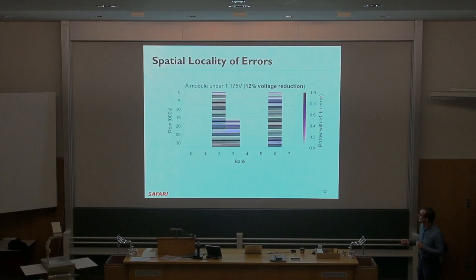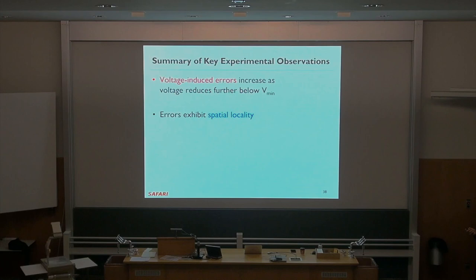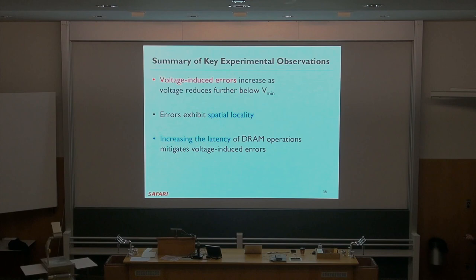If you know which banks are more error-prone, you could operate some banks at lower voltage compared to other banks — assuming you have that circuitry inside. The experimental observations: voltage-induced errors increase as voltage reduces below Vmin; errors exhibit spatial locality; and increasing DRAM operation latency mitigates lower-voltage-induced errors. So maybe you can exploit the trade-off between voltage and latency to reduce energy consumption.